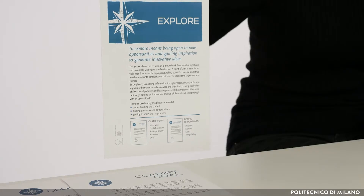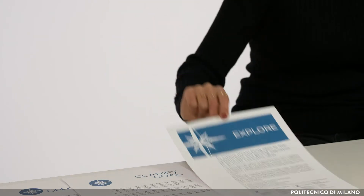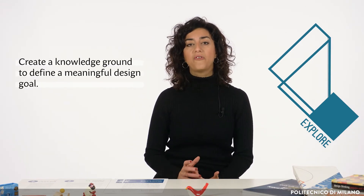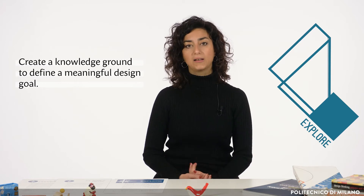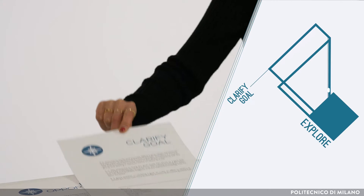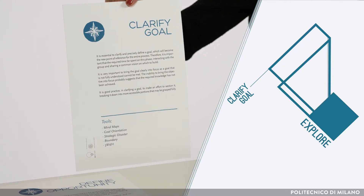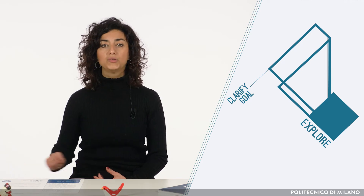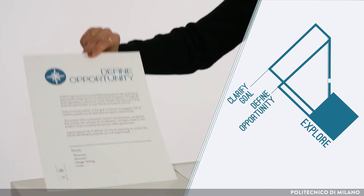Our journey in the Edactivity process starts with the EXPLORE phase. What does EXPLORE mean? What is fundamental to explore in this phase and why? EXPLORE is a crucial phase for innovation because it allows us to create a knowledge ground from which to define a meaningful and clear design goal. EXPLORE is composed of two main steps: the first divergent step is CLARIFY GOAL, followed by a convergent one that is DEFINE OPPORTUNITIES.